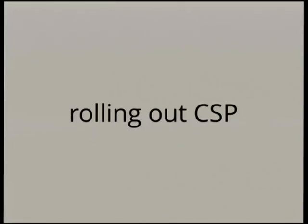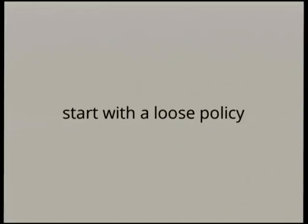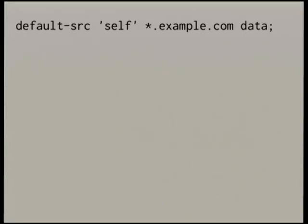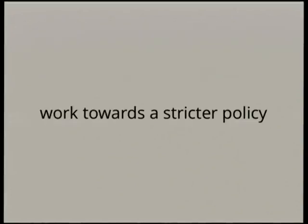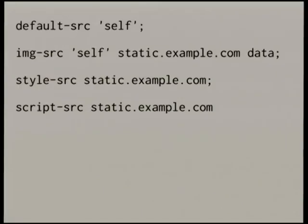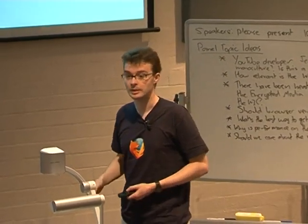If you want to start rolling out CSP, I recommend starting with a somewhat loose policy. Take a guess at what your application probably needs and roll it out. For example, your application probably needs anything on its domain and subdomains, 'self', and maybe the data URI. Start with something like that and see if it works. Then you can work towards a more strict policy — maybe by default only accepting 'self', but allowing images from various places while scripts and styles only come from a single domain, like a CDN.